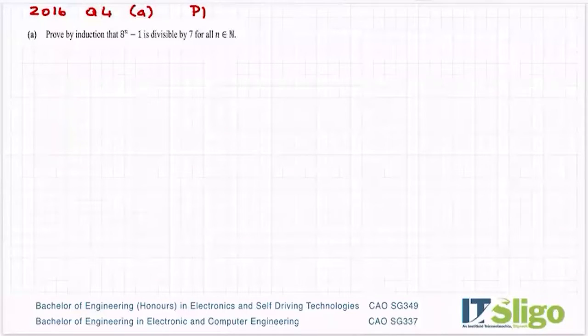Okay, 2016 question and it's only part of a question. Prove by induction that 8 to the power of n minus 1 is divisible by 7 for all n as an element of N.